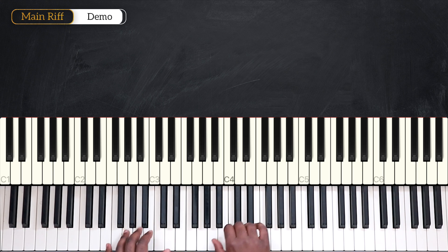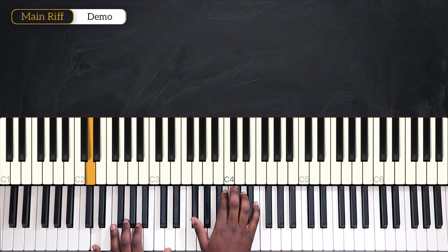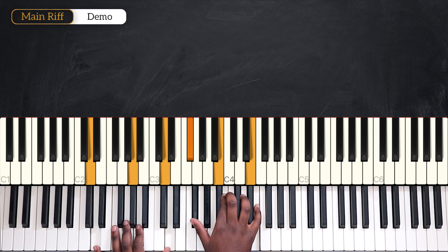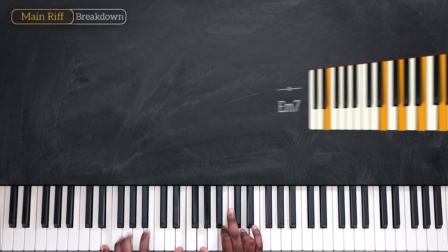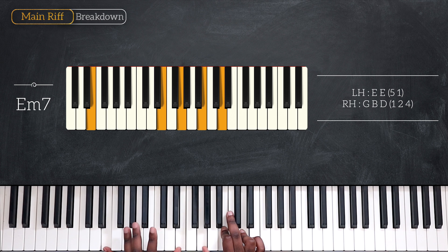All right, what I just played was the main riff that we're going to use for the entire song. We're playing in the key of D, D major. And for the chords of the main riff, we have E minor 7 first, playing octave E on the left, G, B, and D.